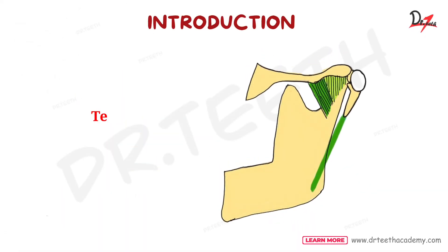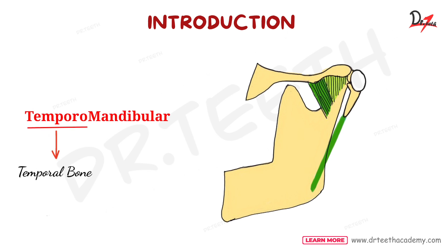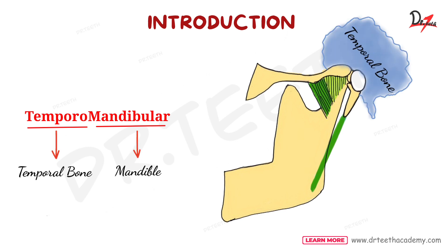Focus on the name temporomandibular: 'temporo' means temporal bone and 'mandibular' means the mandible. So this joint is present between the temporal bone and the mandible. In this diagram you can clearly spot the temporal bone and the mandible, where the mandible is fitting into the temporal bone, making a joint known as the temporomandibular joint or simply the TMJ.